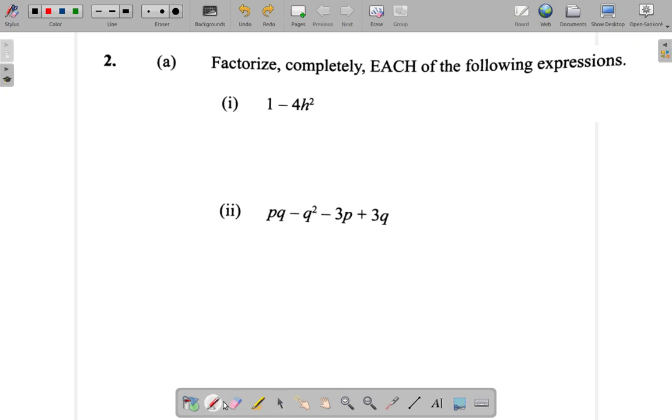This is a difference of two squares. You have one square here which is one squared. The difference which is minus and the other square will be 4 which is 2 squared h squared which you can rewrite as 2h squared.